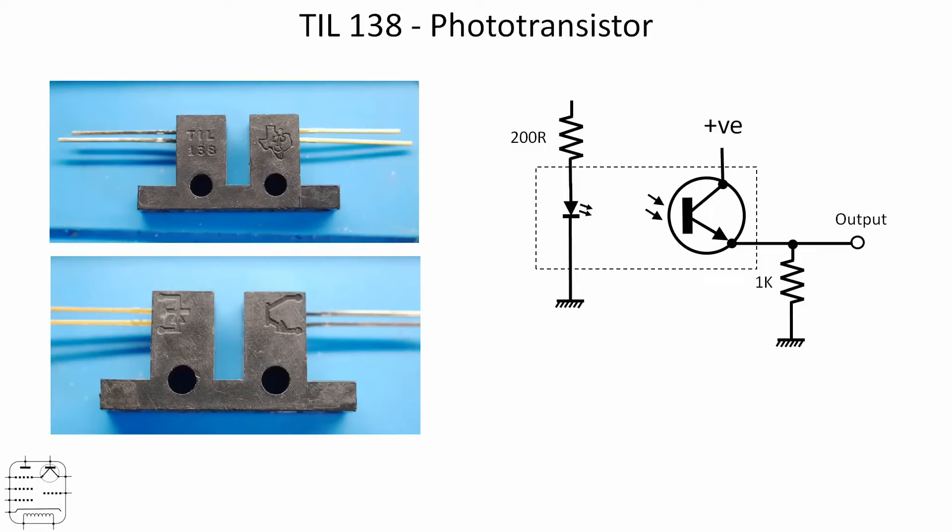Here's the circuit I'm going to use, taken exactly from the TIL-138 datasheet. I've got a 200 ohm current limiting resistor on the diode, and that's not connected to positive because I'm going to use the signal generator to produce the flashes. The transistor has a positive supply to the collector, then a 1k load resistor, and we take the output off the emitter.